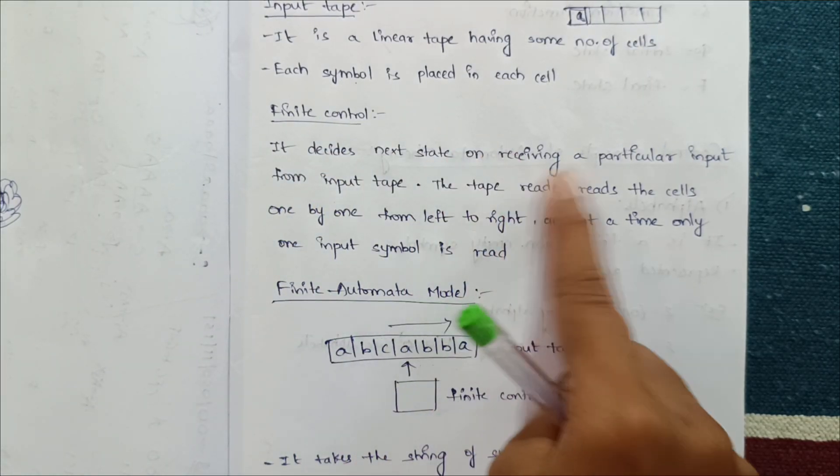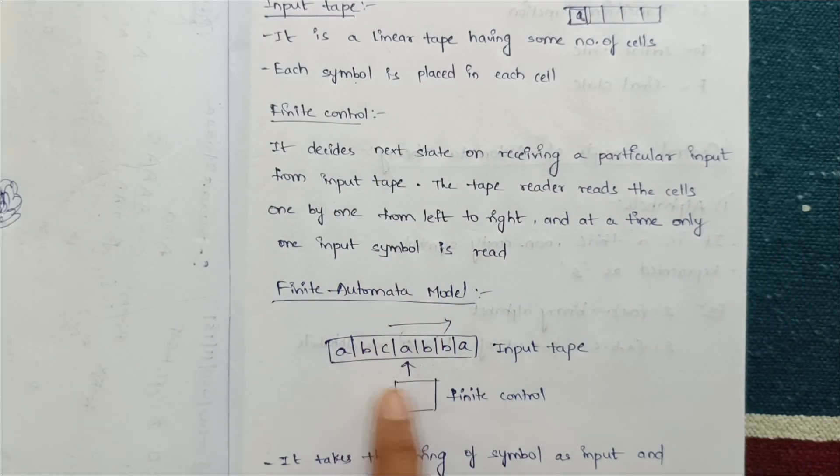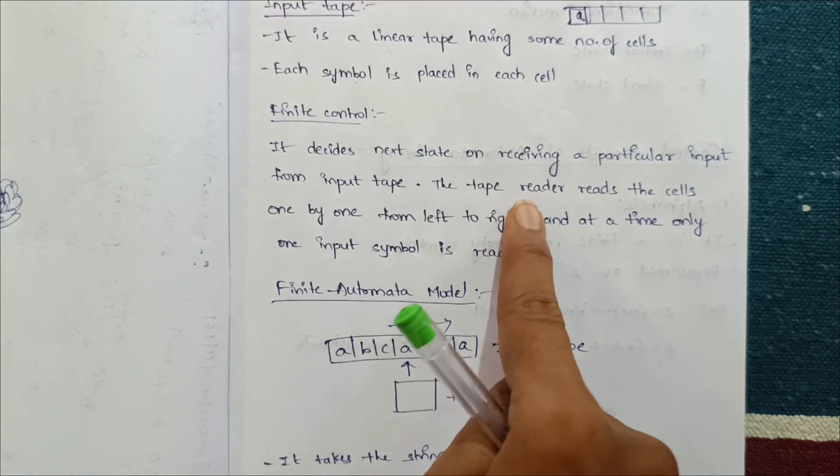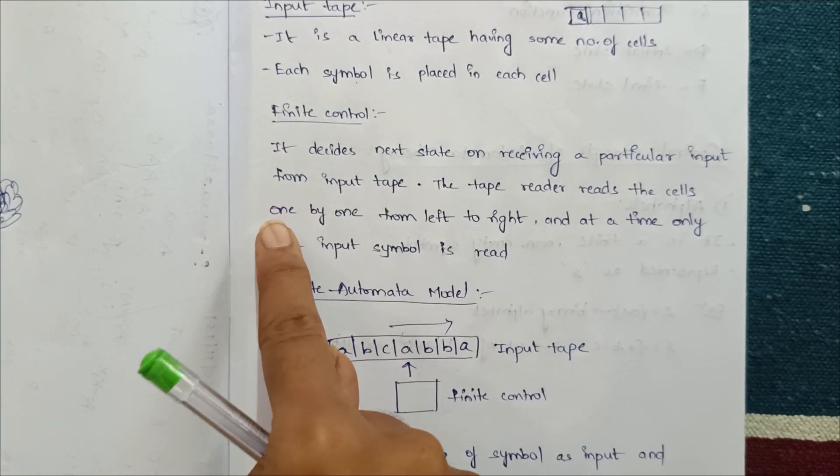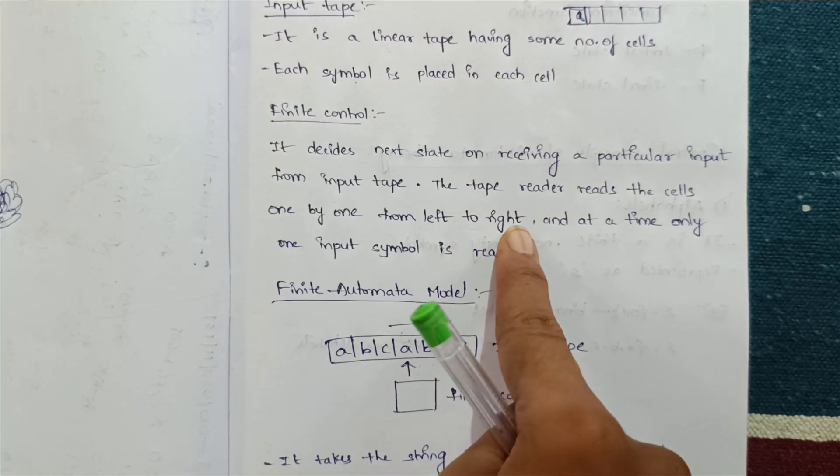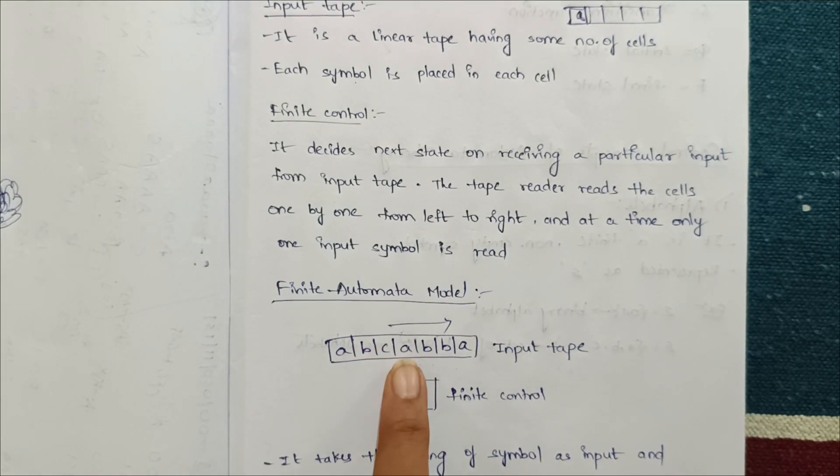It decides next state on receiving a particular input from the input tape. The tape reader reads the cells one by one left to right. So it reads one input symbol at a time and it moves from left to right direction.